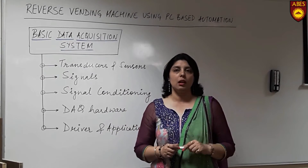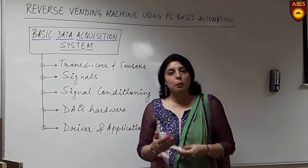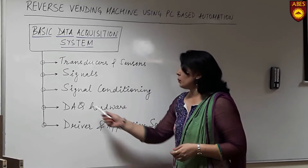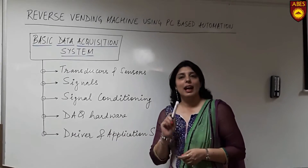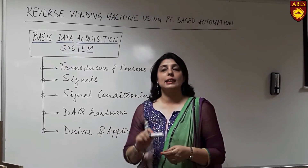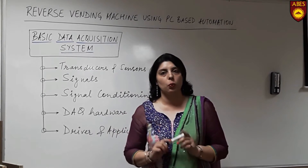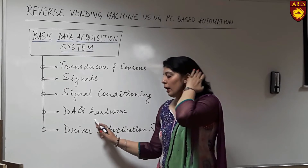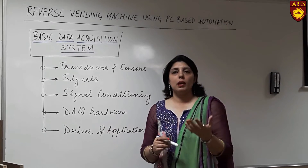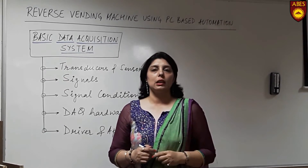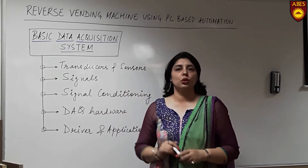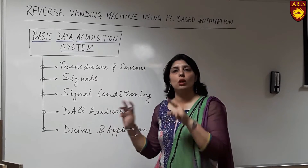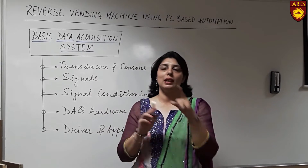Typically, signal conditioning includes functions like amplification or attenuation of the signal, multiplexing, and simultaneous sampling rates. Then comes the DAC hardware, which acts as an interface between the computer and the outside world. For example, if the DAC hardware has accepted an analog signal from the transducer, its function will be to convert this analog signal into a digital one so that the computer can process it and provide accurate information.